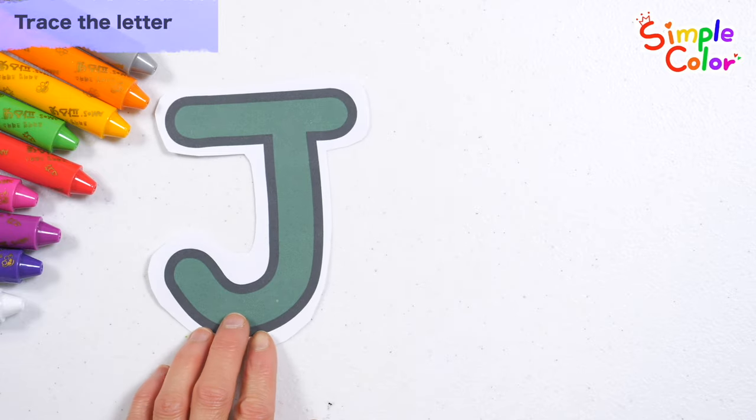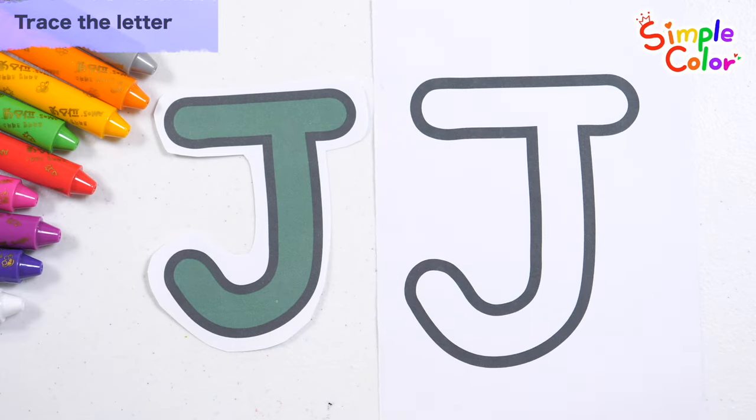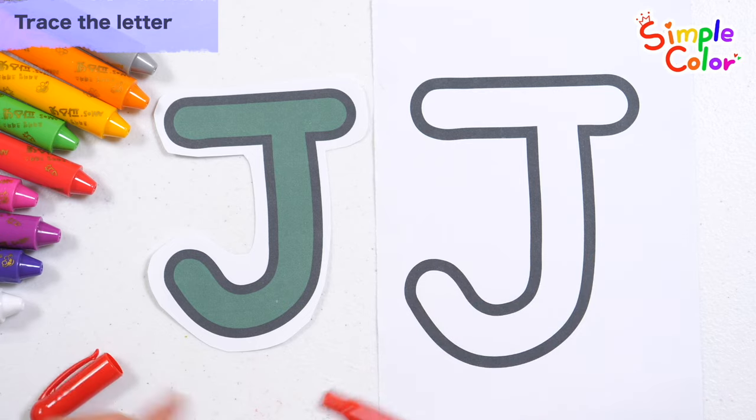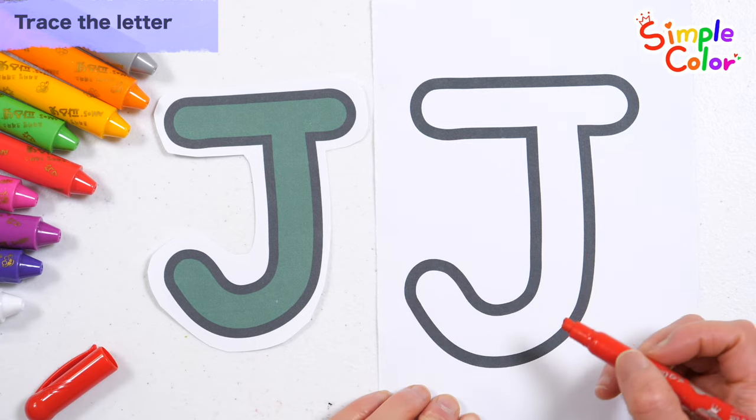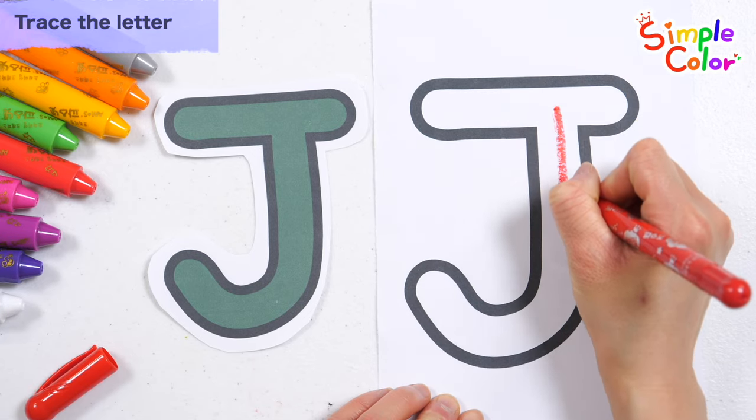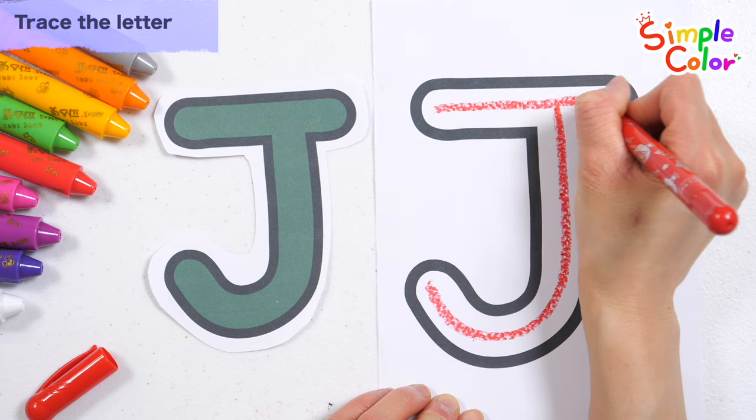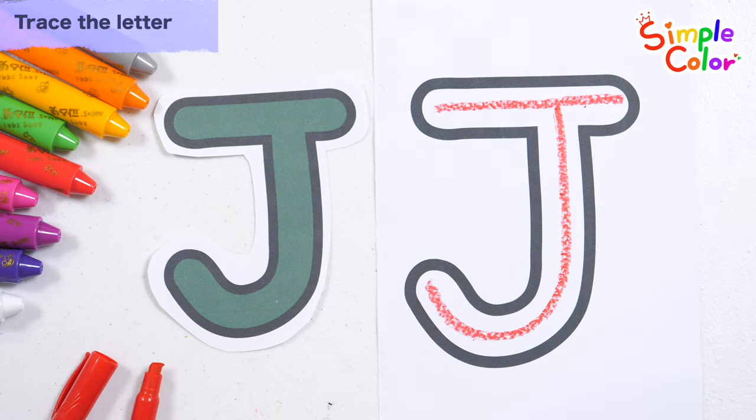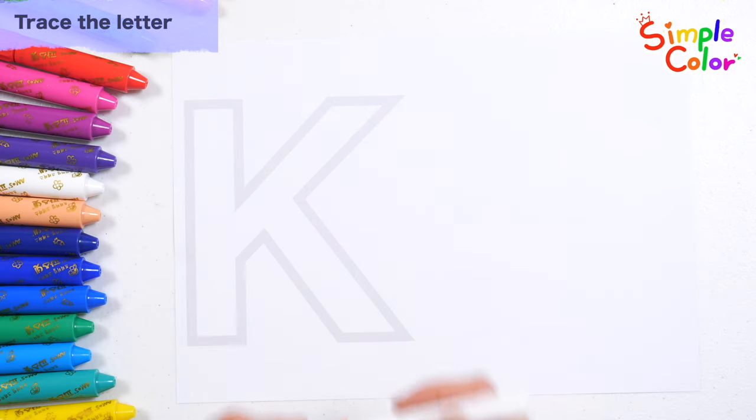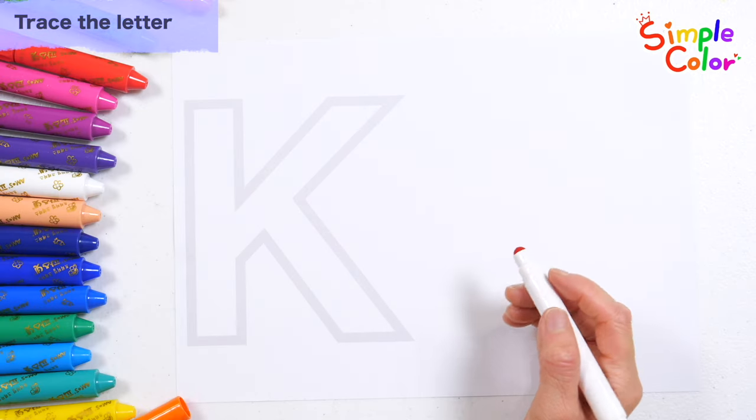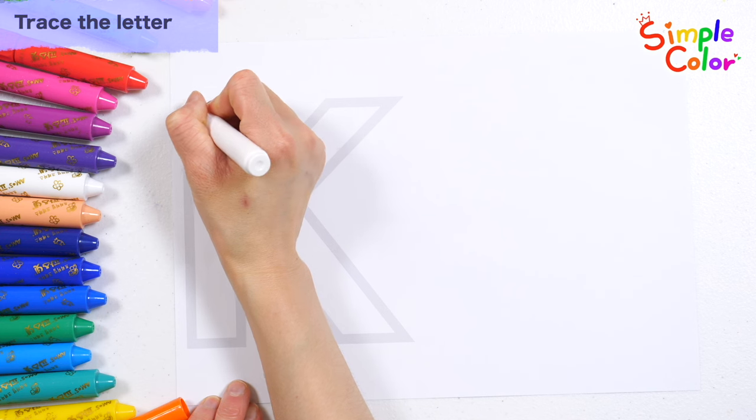J. Shall we write the letters on the right? How? J. Good job! Let's learn the K shaped by tracing the grey border. How?